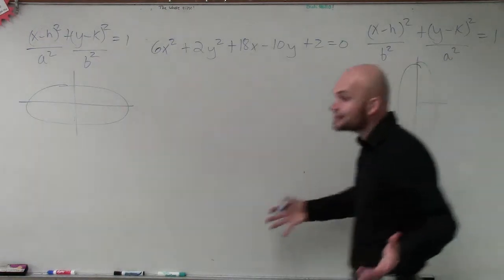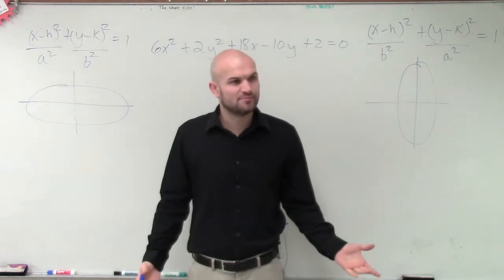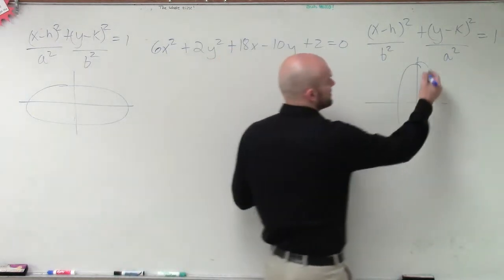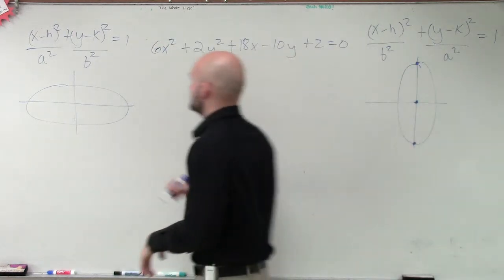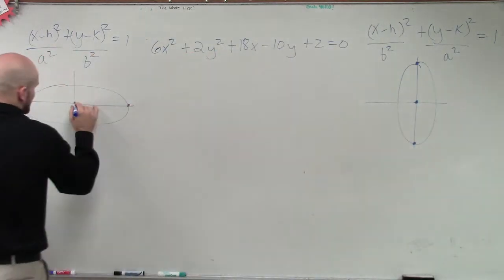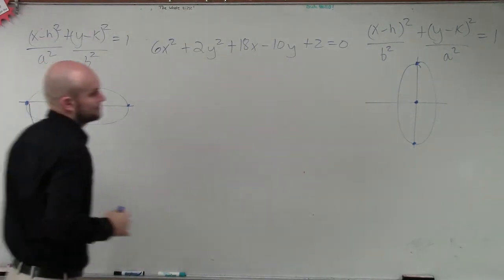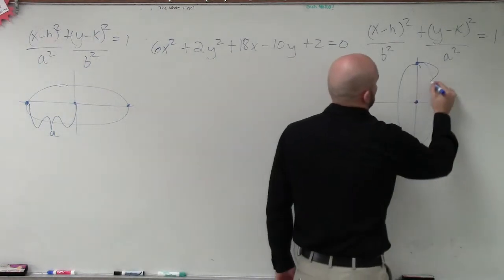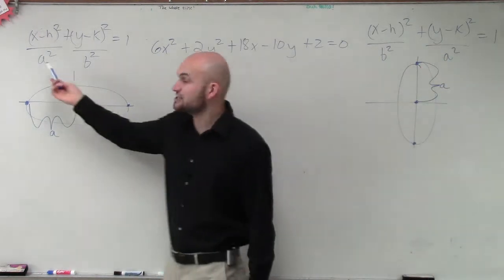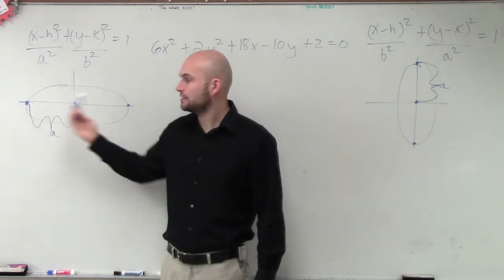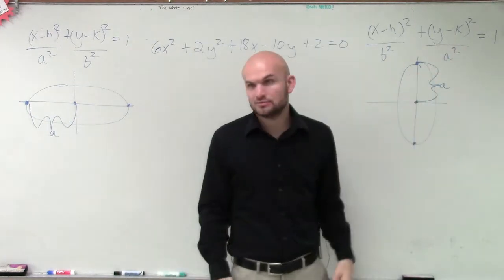It's the exact same equation, pretty much, except the a and b are swapped. And what do a and b represent? Remember, the distance from your center to your vertices — we call that distance a. Notice, when a squared is under the x, it was horizontal. When your a squared was under the y, we had a vertical.